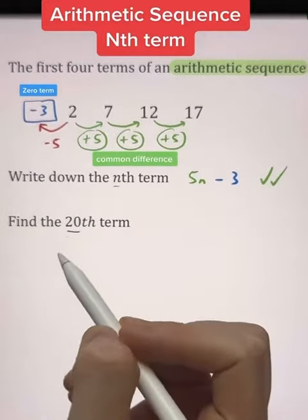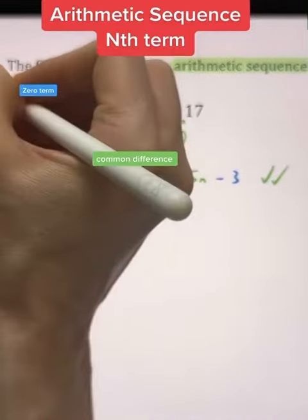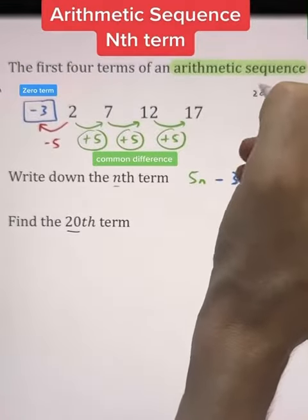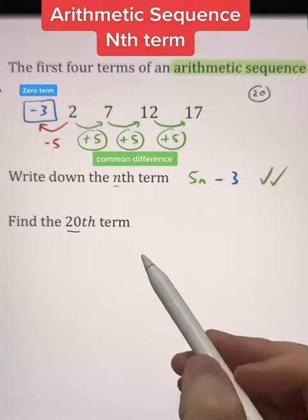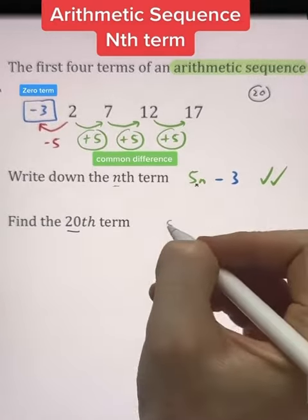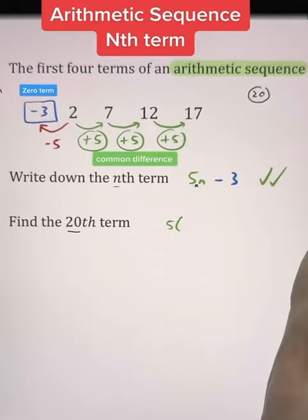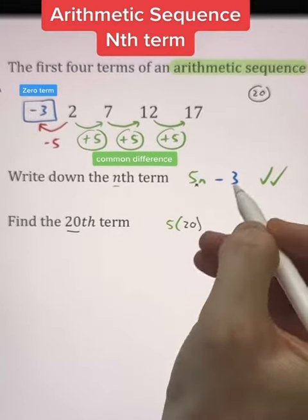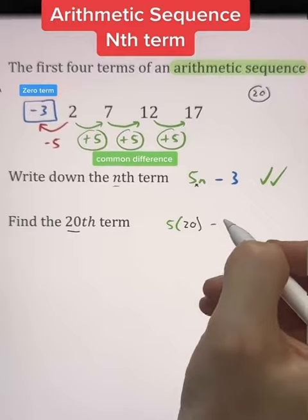To find the 20th term, we know the 20th term occurs when n equals 20. Therefore, substituting into our nth term, we know 5n in algebra means 5 multiplied by n. Hence we're going to have 5 multiplied by n, which in this case is 20, and we subtract the 3 that we must place at the end.